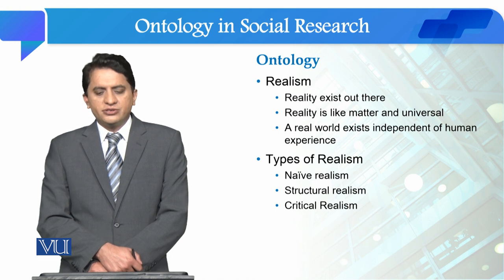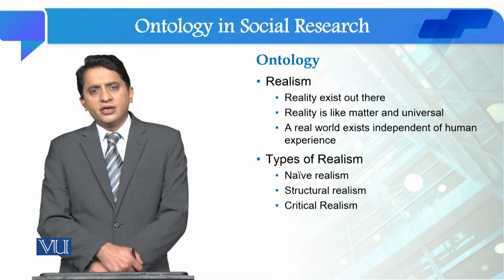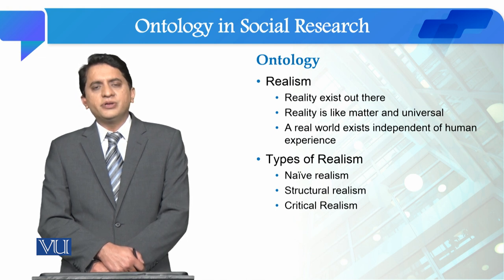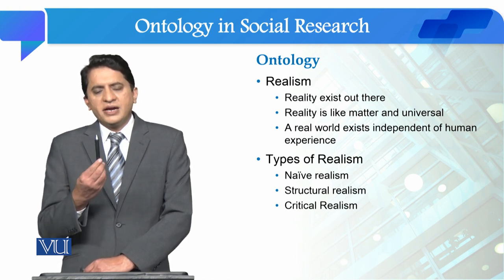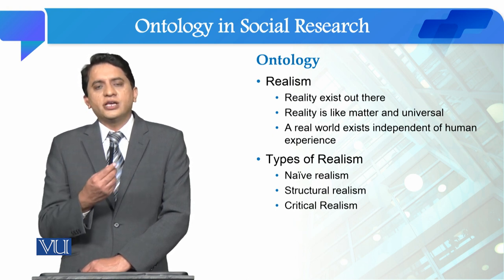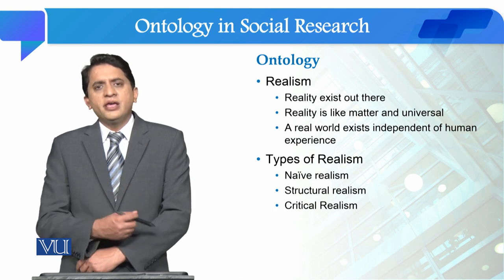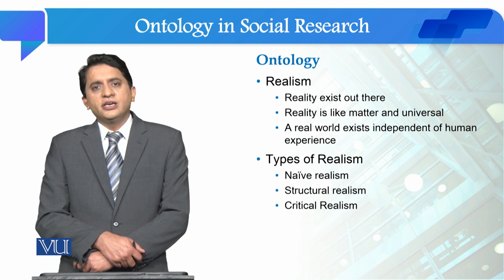The first ontology is realism. According to realism, a reality exists out there — it is just like a matter. The fact is independent of human experience, and a real world exists independent of human experience. So it is the physical world.